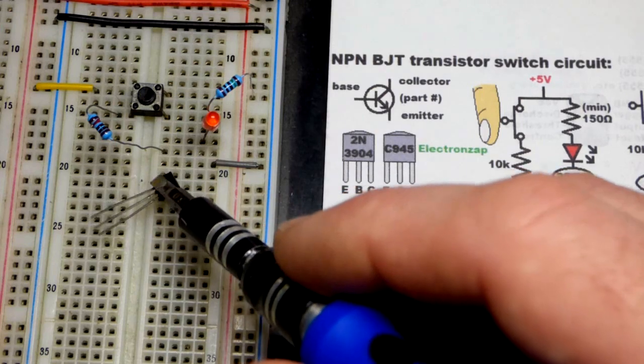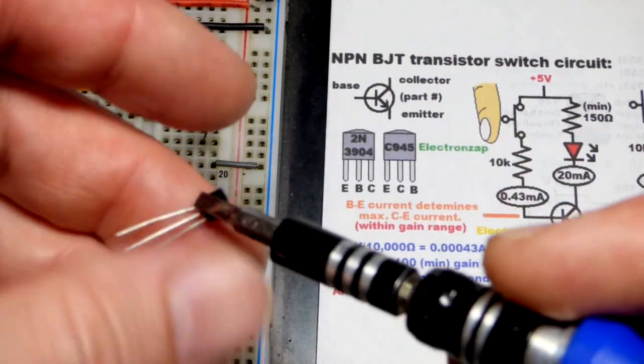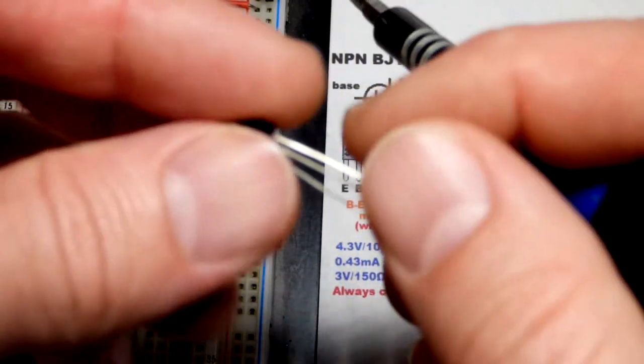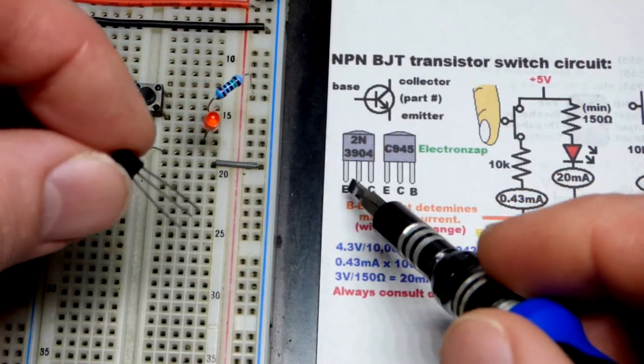When you have the actual component you may need magnification to read it and this magnetic screwdriver actually picked it up. But we're going to use the 2N3904.